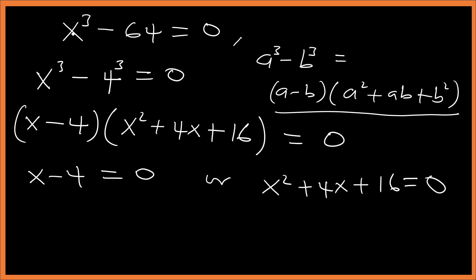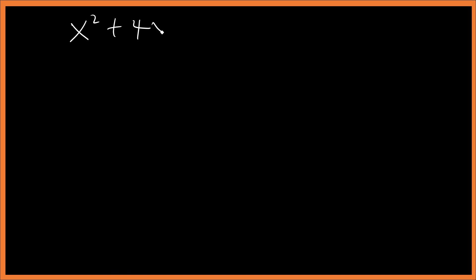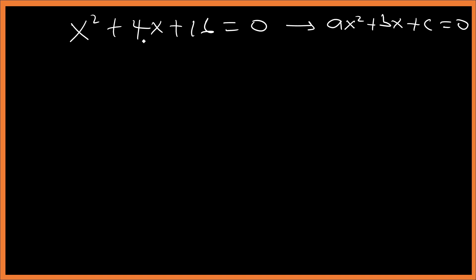The first solution is x equals 4. Now let's find the other two solutions from x squared plus 4x plus 16 equals zero using the quadratic formula. Comparing with ax squared plus bx plus c equals zero, we identify a equals 1, b equals 4, and c equals 16.